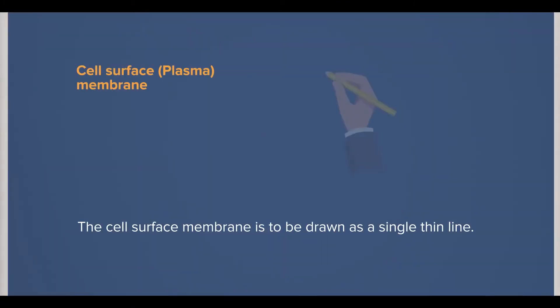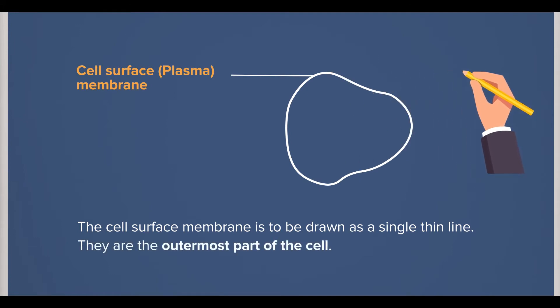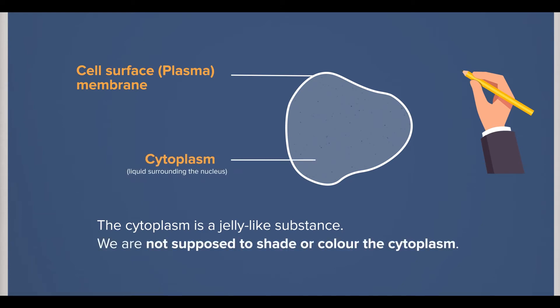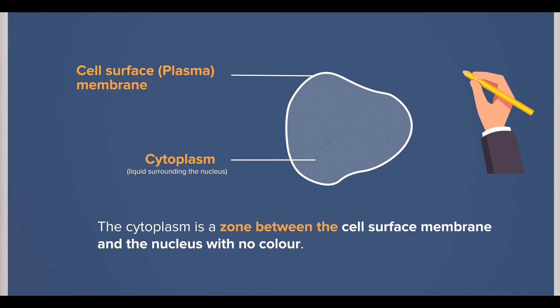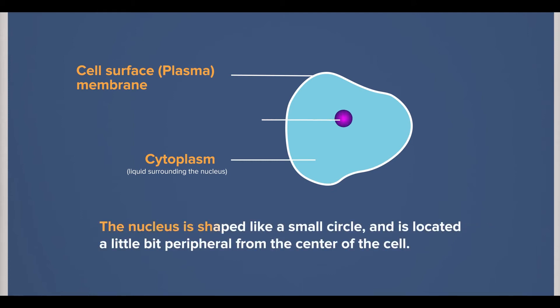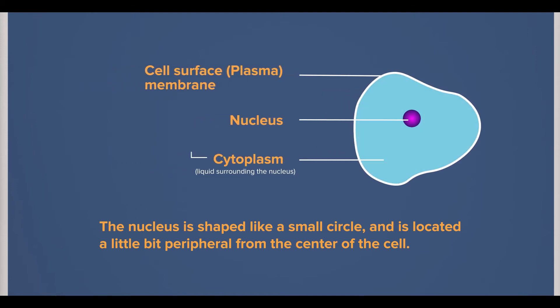The cell surface membrane is to be drawn as a single thin line — it is the outermost part of the cell. The cytoplasm is a jelly-like substance. We are not supposed to shade or color the cytoplasm; it will be drawn as a zone between the cell surface membrane and the nucleus with no color. The nucleus is shaped like a small circle and is located a little bit peripheral from the center of the cell. When you draw the nucleus, you cannot shade or color it. Together, the cytoplasm and the nucleus may be referred to as the protoplasm.